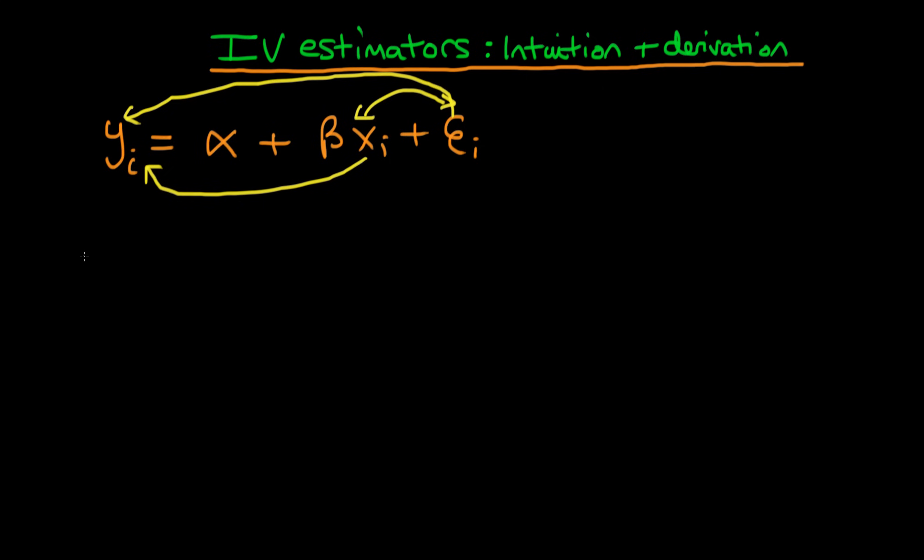So the problem here is that if we were to estimate beta by looking at the change in y divided by the change in x, then the problem is that the change in y is composed of two different parts. There's the change in y which is due to x and then there's the change in y which is due to the error term. And on the bottom we've still got delta x here.